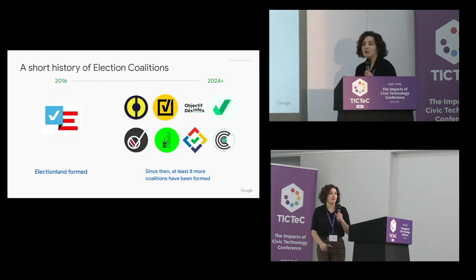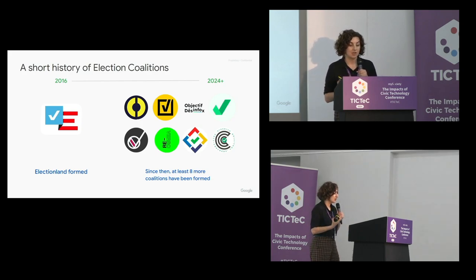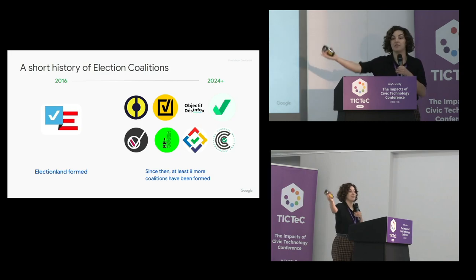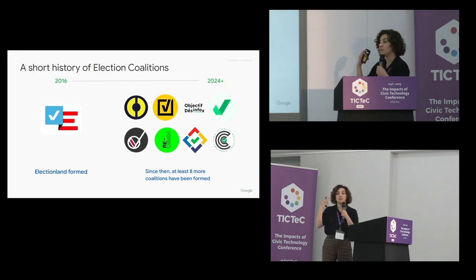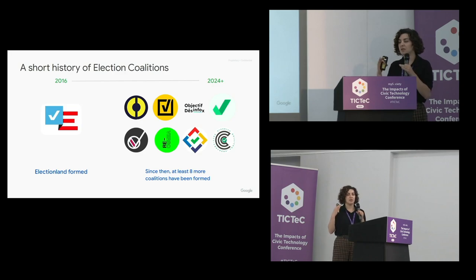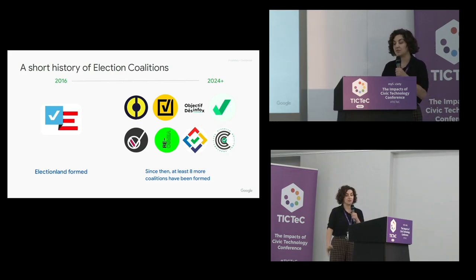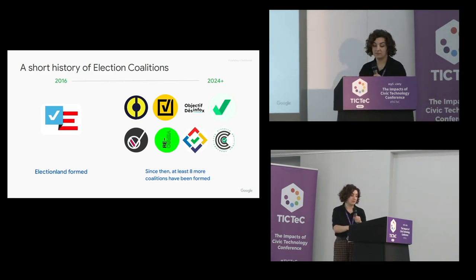Election coalitions are essentially when you have a series of organizations come together during an election — usually media, fact-checking organizations, or civic organizations — to share resources in some meaningful way, to make sure that the outputs of fact-checking or the research done around an election goes the furthest. The first example of this was ElectionLand in 2016, where a bunch of universities and media organizations got together and started to pool their resources on fact-checking.